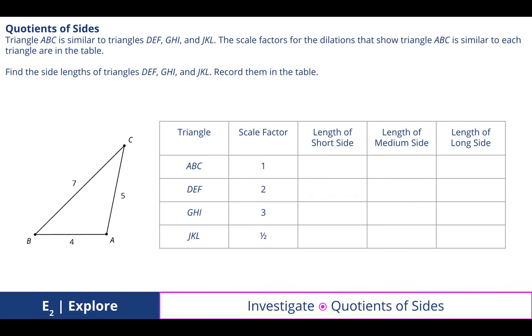In quotients of sides, we looked at triangle ABC, and we know that it's similar to three other triangles: DEF, GHI, and JKL. The scale factors for the dilations have been given to us. For ABC, the length of the short side is 4, so we filled all this in. The length of the medium side is 5, and the length of the long side is 7.